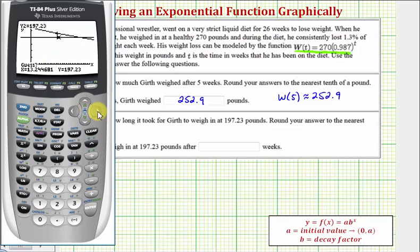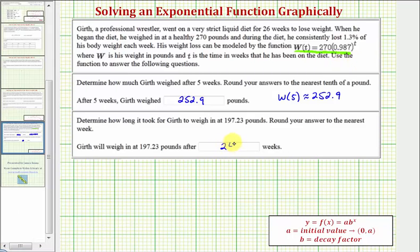I'm going to go ahead and move the cursor closer to the point of intersection, maybe somewhere in here. And press enter again. And notice how the coordinates are shown here below. So it took approximately 24 weeks for Girth to weigh 197.23 pounds. I hope you found this helpful.